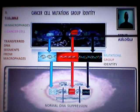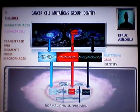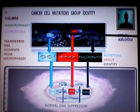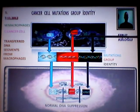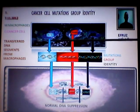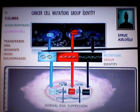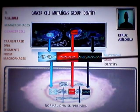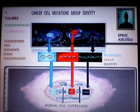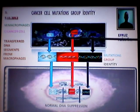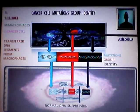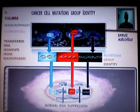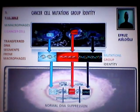Very long time later, chronic inflammation macrophages are pouring and releasing into the chronic inflammation cell area: growth factors, cytokines, DNA segments, prostaglandins, and nitric oxides.